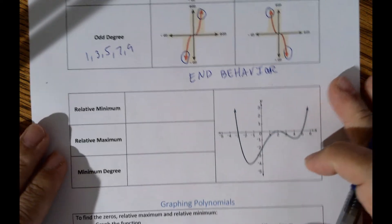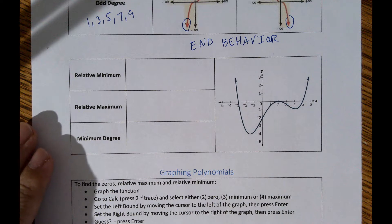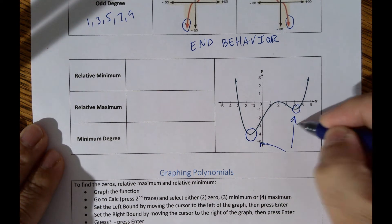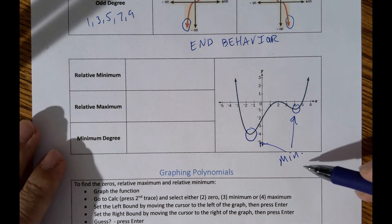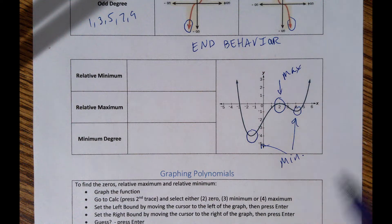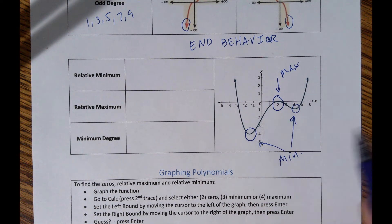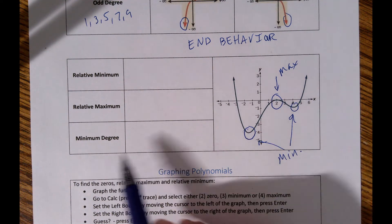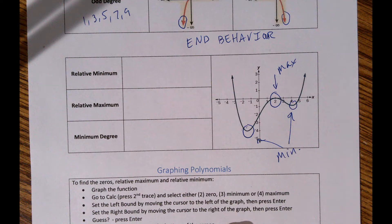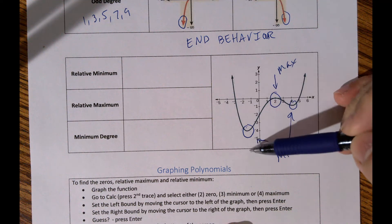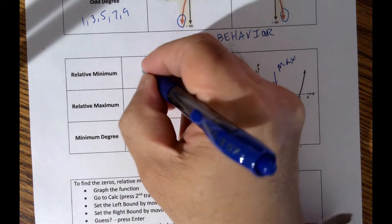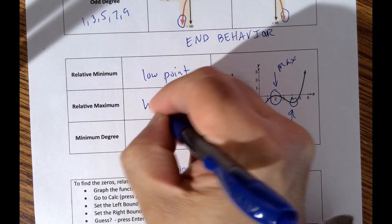Relative minimum refers to local low points on a graph, and relative maximum refers to local high points. To find the minimum degree, you count the number of direction changes the graph makes. For example, counting one, two, three, four direction changes gives a minimum degree of four.